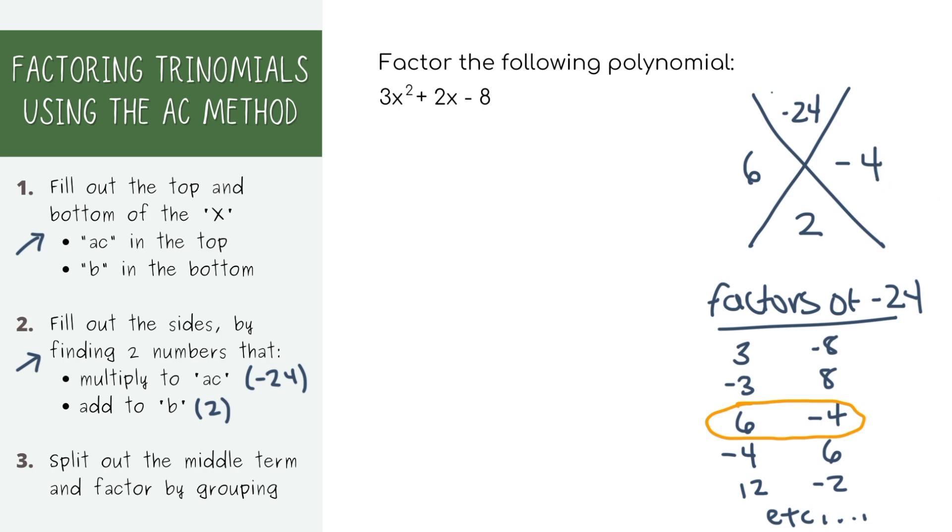Now we're going to take our original expression and rewrite it using the two numbers we just found. We're going to split up our 2x into 6x minus 4x. We're not doing anything crazy, we're just splitting up that middle value. These two expressions are actually the same thing.